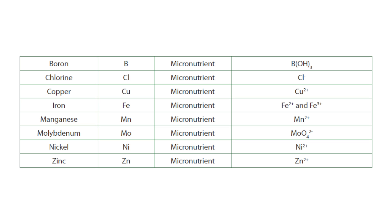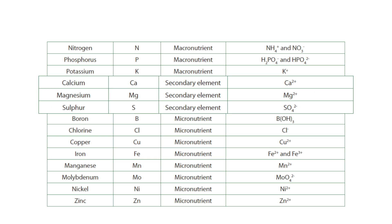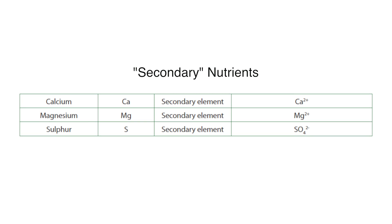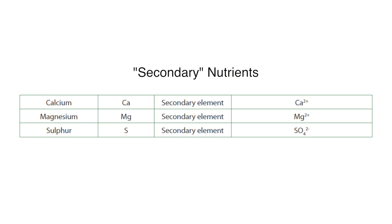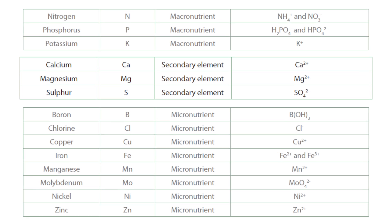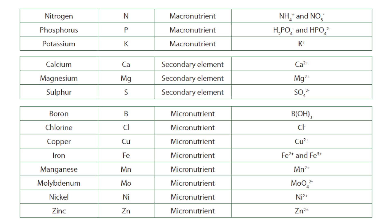Others, such as copper, zinc, manganese and iron, are classified as micronutrients because they are needed in relatively small amounts. And in between these two groups are the so-called secondary nutrients, including sulfur, magnesium and calcium, which form a special group of macronutrients that are not as frequently limiting to plant growth as nitrogen, phosphorus and potassium.